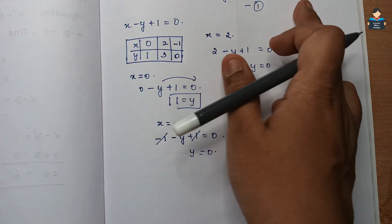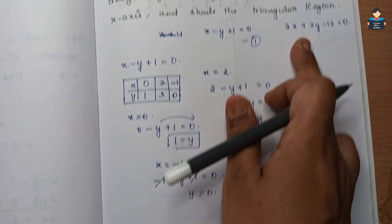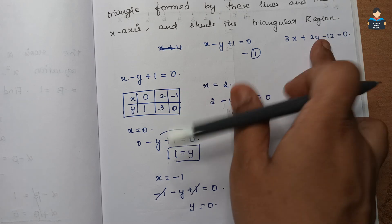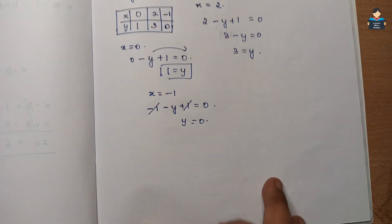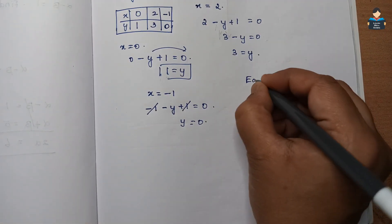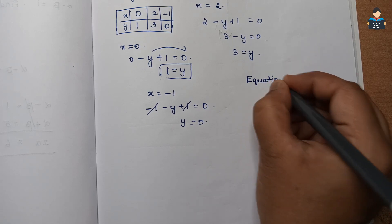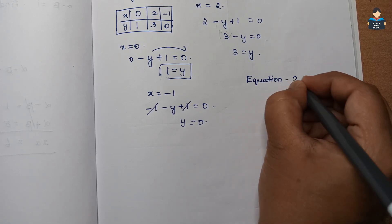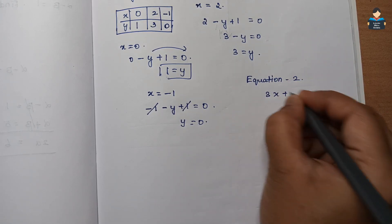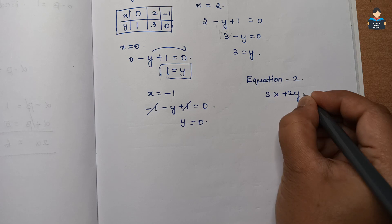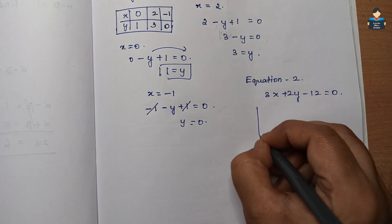Next, we will form the table for equation 2: 3x plus 2y minus 12 equal to 0.